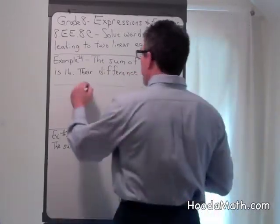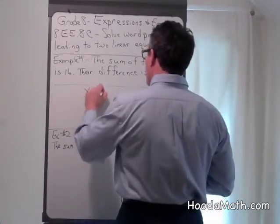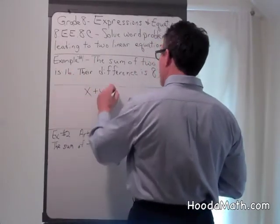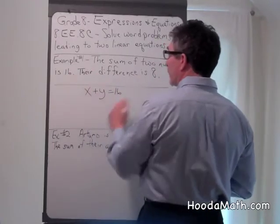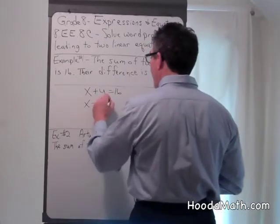So we'll say one of the numbers is x, one of the numbers is y. So the sum of x plus y is 16. The difference means we subtract them, x minus y equals 8.